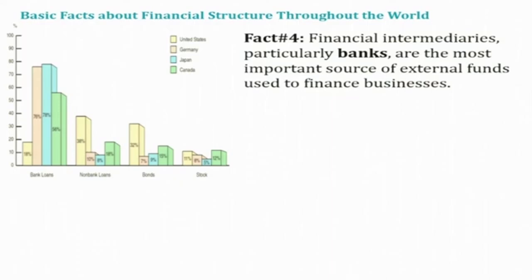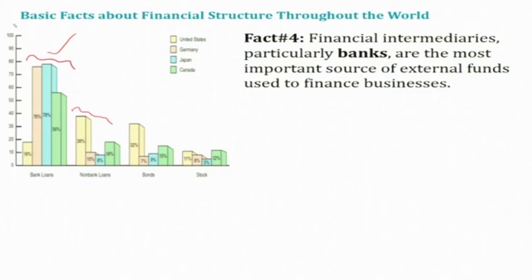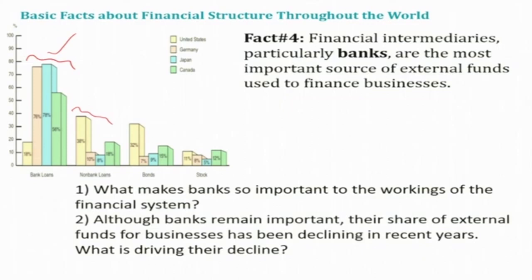Fact number four: financial intermediaries, particularly banks, are the most important source of external funds for businesses. For example, in Germany, 76% and in Japan, 78% of firms' external financing comes through bank loans. Even within financial intermediaries, banks occupy a larger share compared to non-bank sources such as pension fund loans or insurance company loans. What makes banks so important to the working of the financial system?